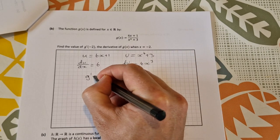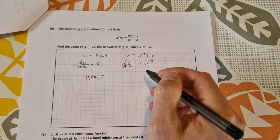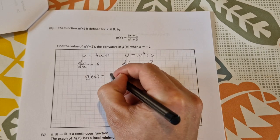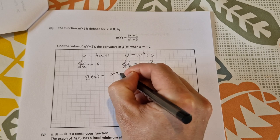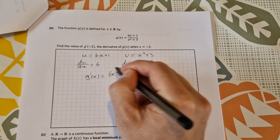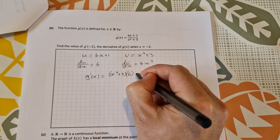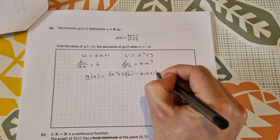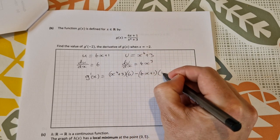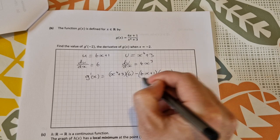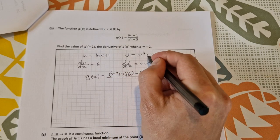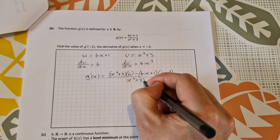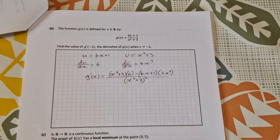g'(x) = [v·(du/dx) - u·(dv/dx)]/v². That's [(x⁴ + 3)·6 - (6x + 1)·4x³]/(x⁴ + 3)².